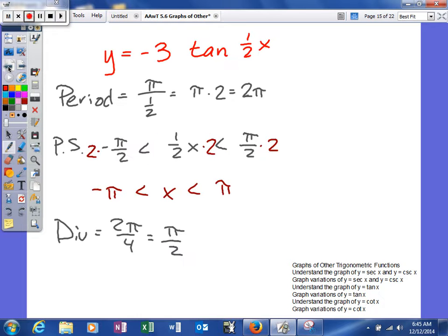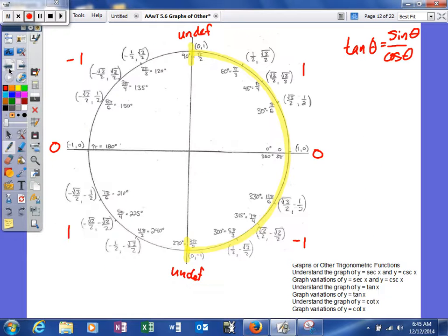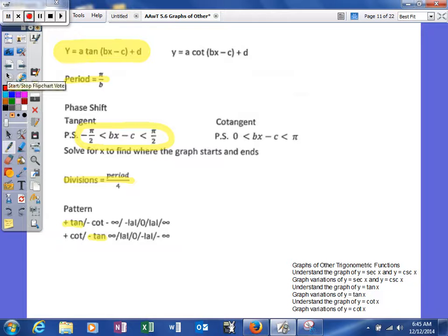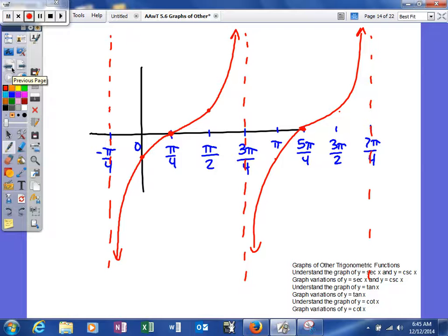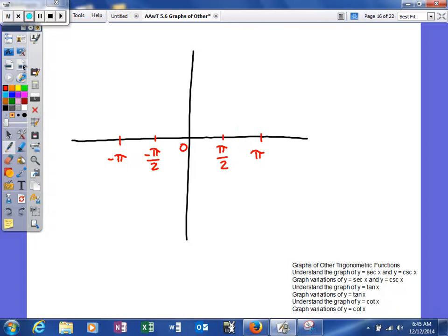Now what we're going to do is we're going to go back and look and see at the pattern. We're going to graph negative 3 tangent. So negative tangent, looking back, negative tangent goes like this. Positive infinity, absolute value of a, 0, negative absolute value of a, negative infinity. And as you should know, if this is what tangent looks like, if you have a negative a, it's going to reflect about the x-axis. So this part right here is going to go this way, and this part right here is going to go this way.